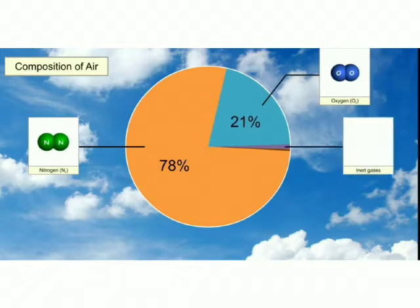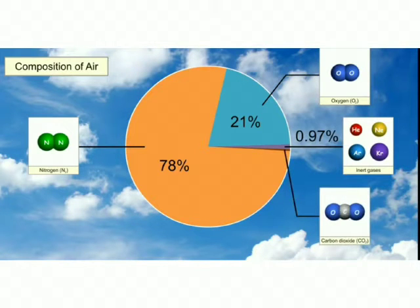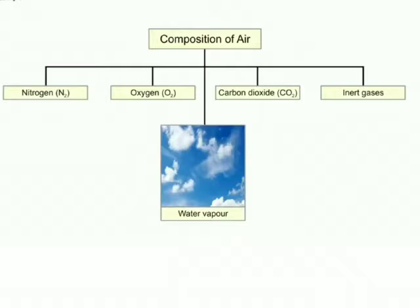Inert gases including helium, argon, etc. make up about 0.97% of the air. And the other important gas contained in the air is carbon dioxide. It makes up only about 0.03%. The air also contains water vapor.